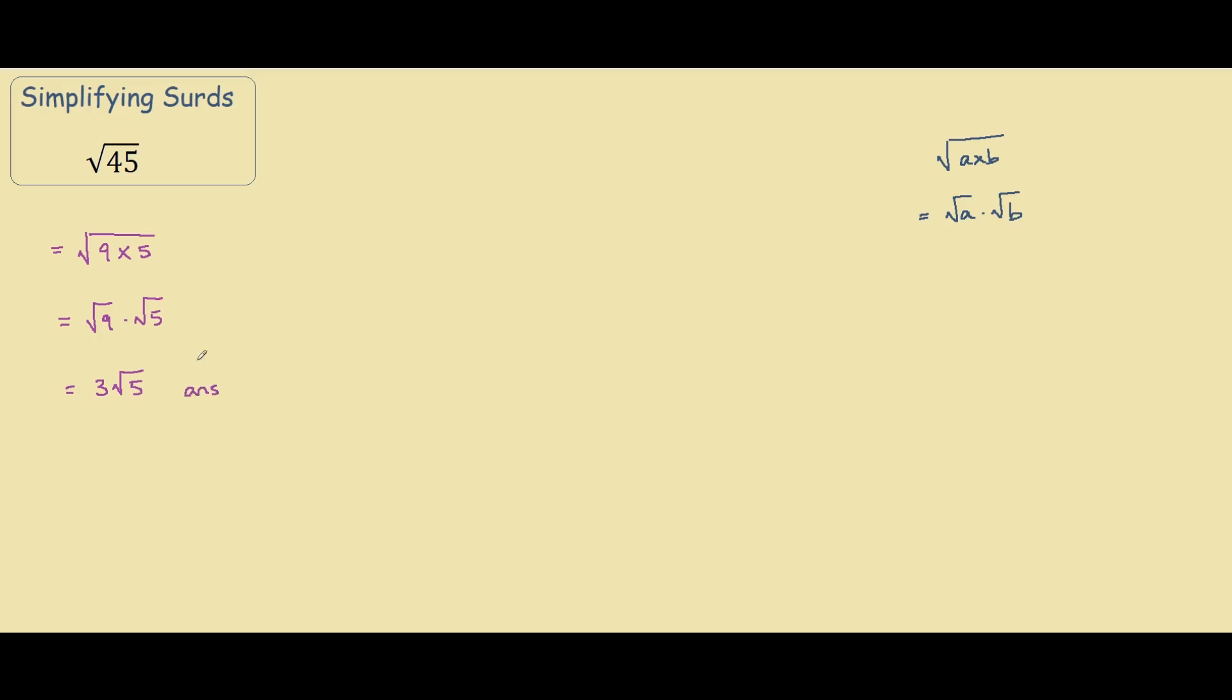And this is our answer. You can verify this by entering 3 square root of 5 into your calculator and entering square root of 45 into your calculator. And you should get the same value for both of these surds.